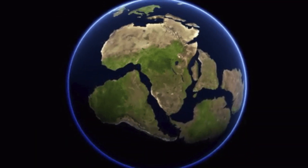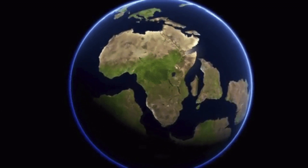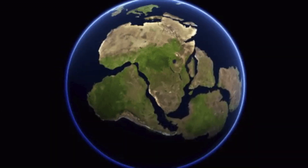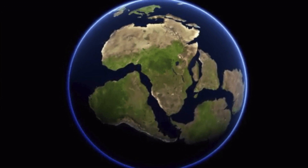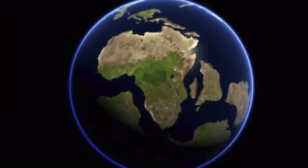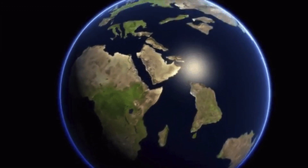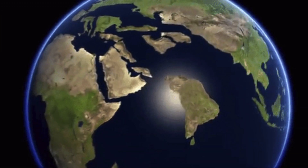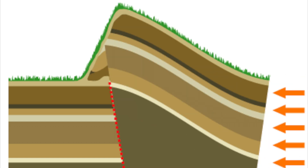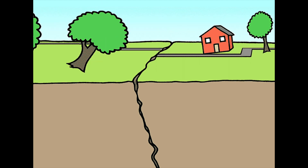The plates are constantly moving over this weaker layer. This movement is known as plate tectonics. As the plates move, they interact at their boundaries in different ways. As plates crash into each other, they may rise up and form mountains. Plates might also move apart from each other, causing earthquakes.